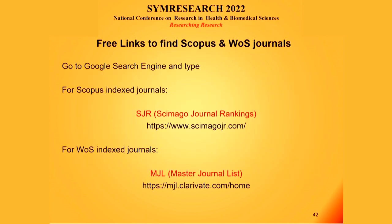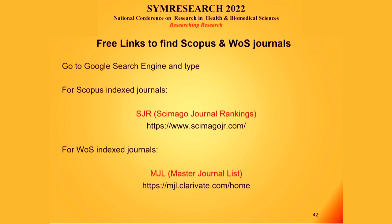Many faculty members and students don't have access to Scopus and Web of Science databases. For Scopus-indexed journals, you can freely go to SJR — Scimago Journal Ranking — and whatever list you get, they are Scopus-indexed journals, though the frequency of update is very low, so be careful when selecting a journal. For Web of Science-indexed journals, you can simply type MJL — Master Journal List — to see the number of journals area-wise in a particular field.